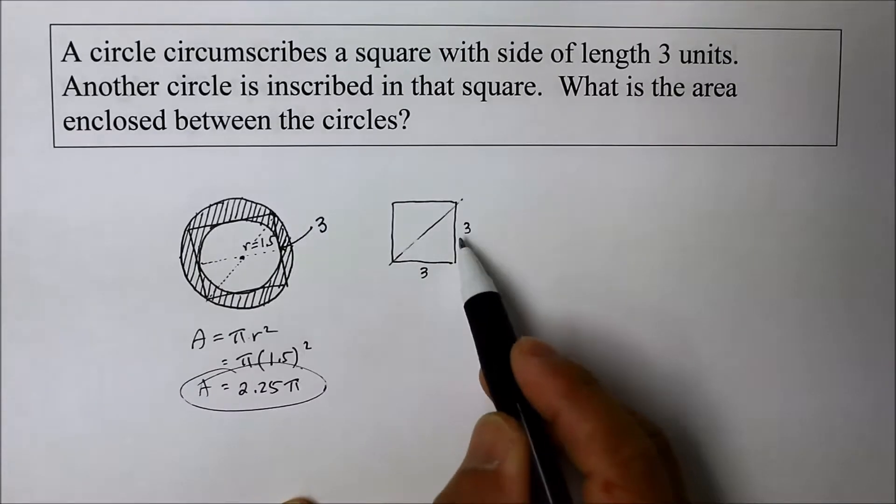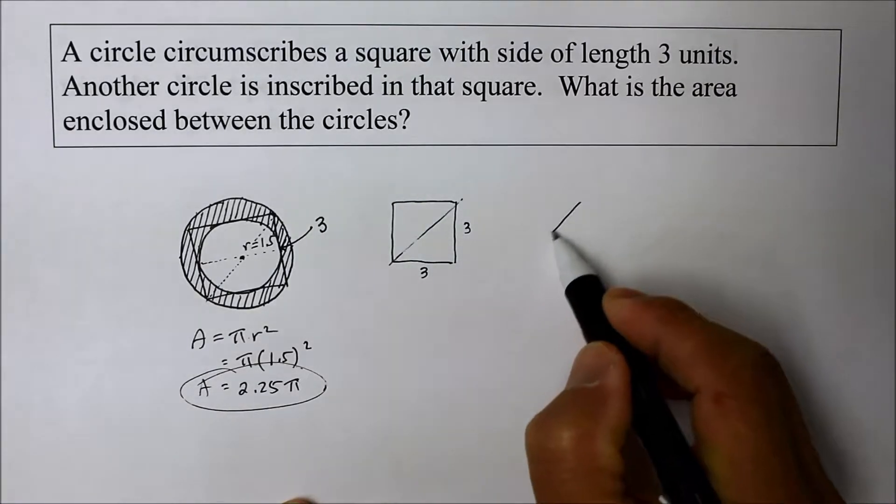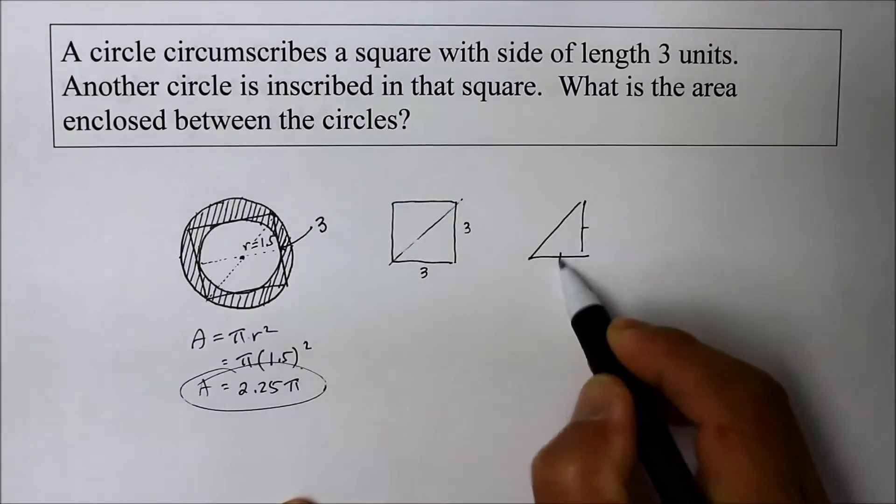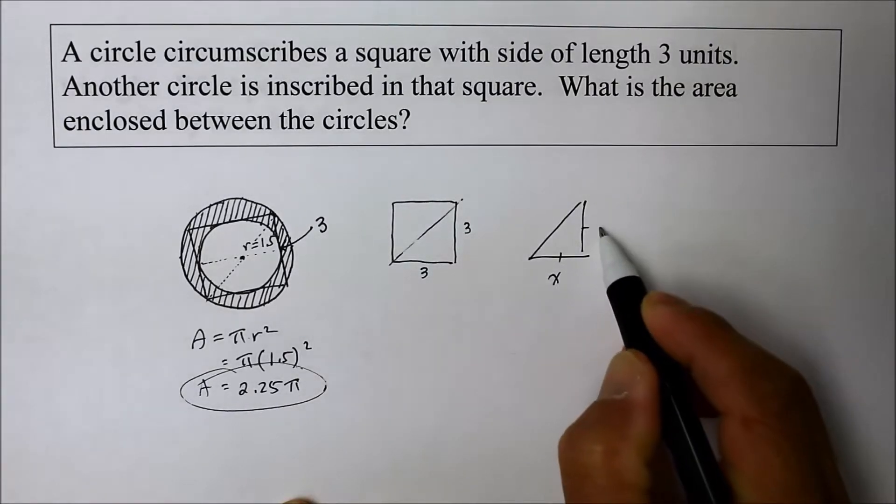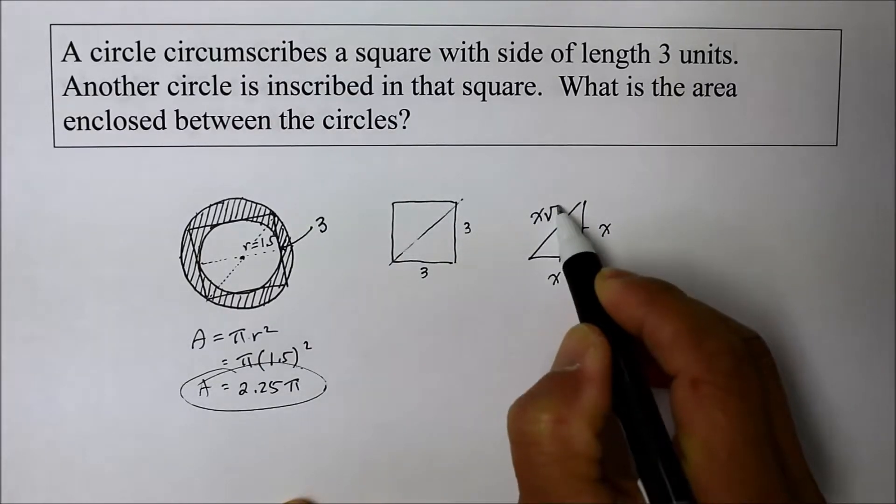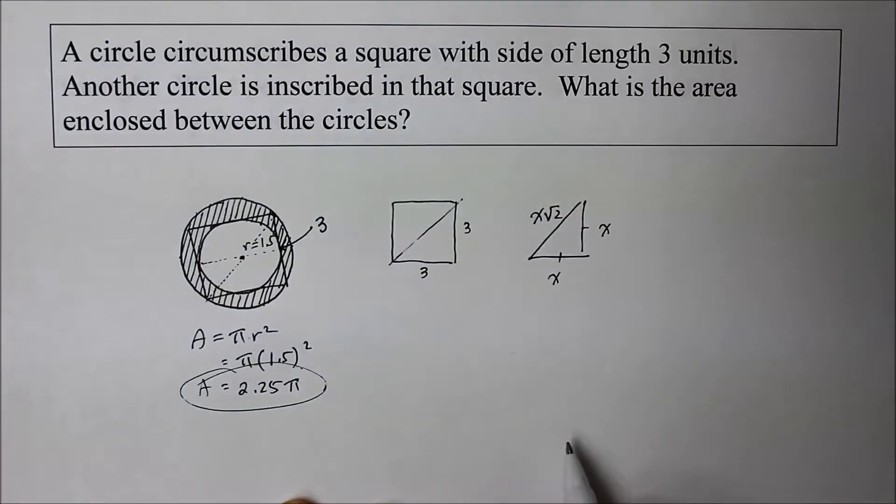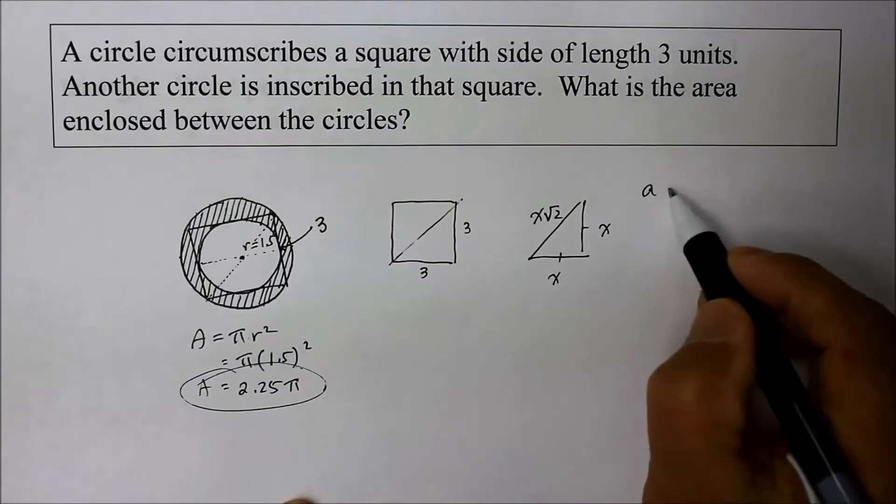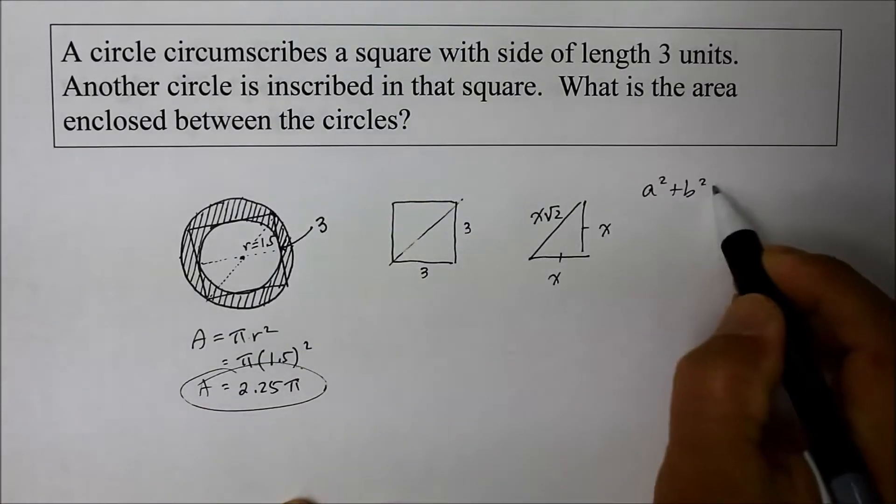Well, if you look at it, this is an isosceles triangle. The ratio for the isosceles is, since two sides are congruent, if this is x, this is also x, then this will always be x square root of 2. How do you show that? Use the Pythagorean theorem. a squared plus b squared equals c squared.